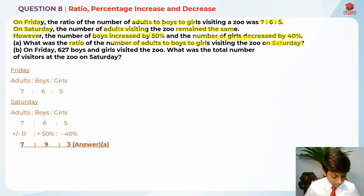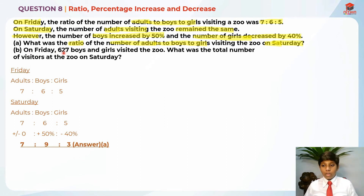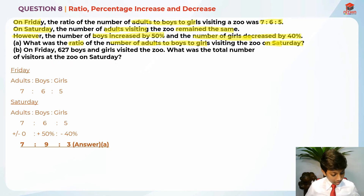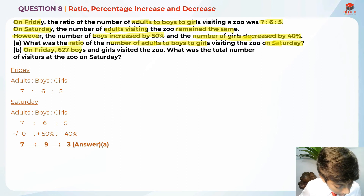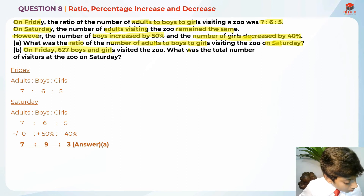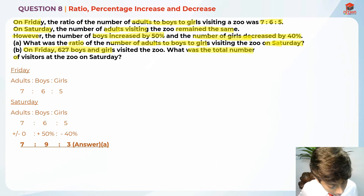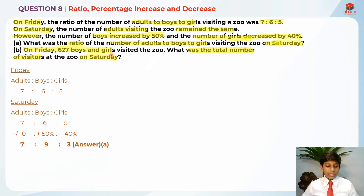Now let's move on to part B. On Friday, six hundred and twenty-seven boys and girls visited the zoo. What was the total number of visitors at the zoo on Saturday? Let me highlight the key information: on Friday, 627 boys and girls visited, and we need the total number of visitors on Saturday.